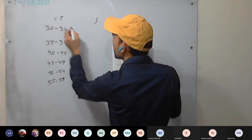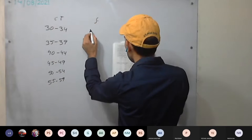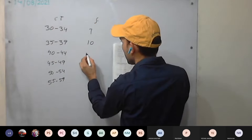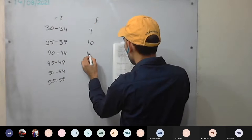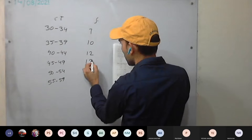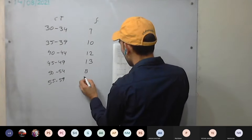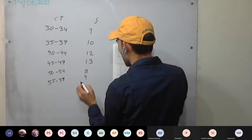These are the class intervals, and their corresponding frequencies are: 7, 10, 12, 13, 8, and 4.